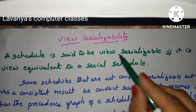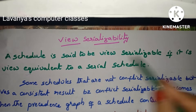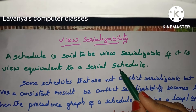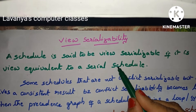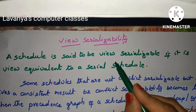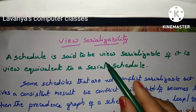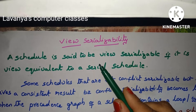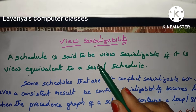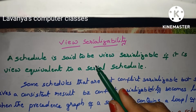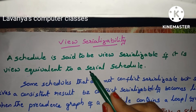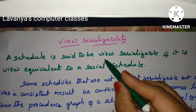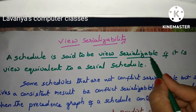A schedule is said to be view serializable if it is view equivalent to a serial schedule. That means it is a non-serial schedule — it looks like a parallel schedule — but if it is view equivalent to a serial schedule, then it is known as view serializable.